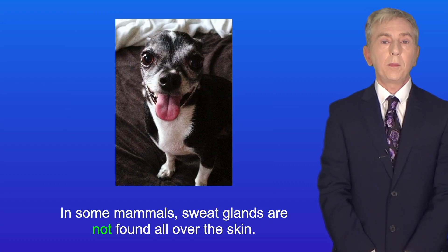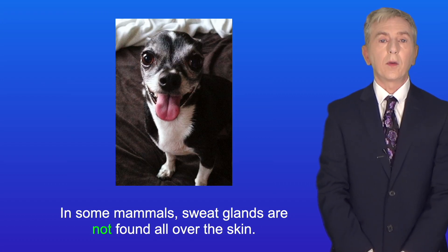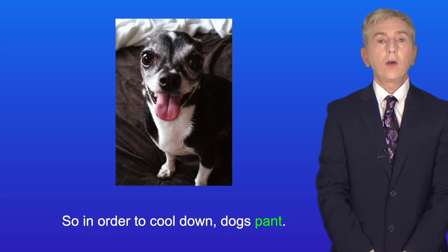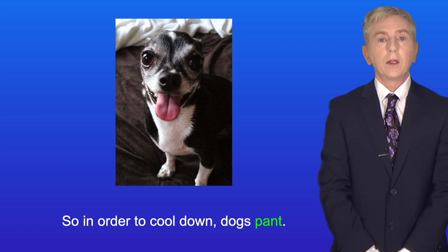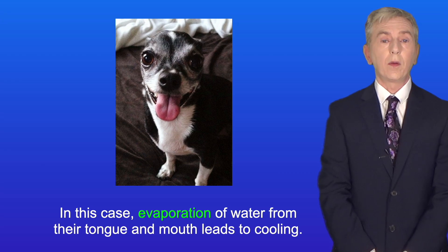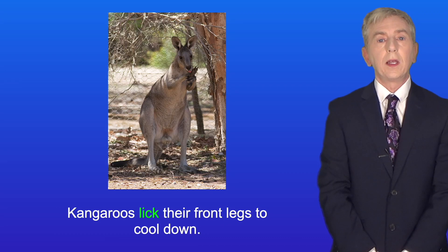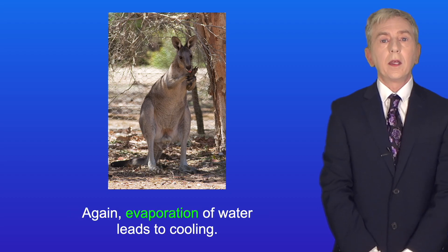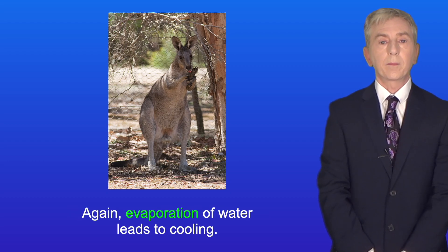In some mammals, sweat glands are not found all over the skin. For example, dogs have sweat glands mainly on their paws, so in order to cool down, dogs pant. In this case, evaporation of water from their tongue and mouth leads to cooling. Kangaroos lick their front legs to cool down, and again, evaporation of water leads to cooling.